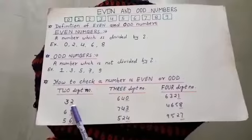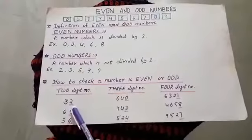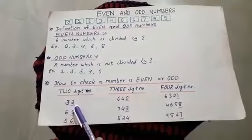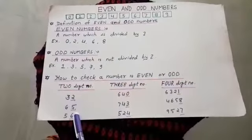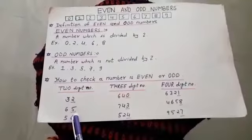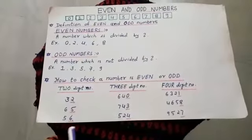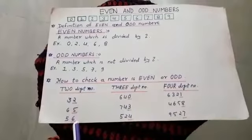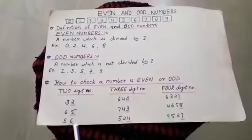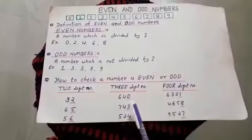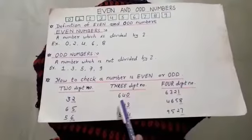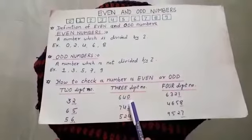The last digit is 2, and 2 is an even number, so the complete number is even. The last digit is 5; 5 is an odd number, so the complete number is odd. The last digit is 6; 6 is an even number, so the complete number is even. The last digit is 0; 0 is an even number, so the complete number is even.